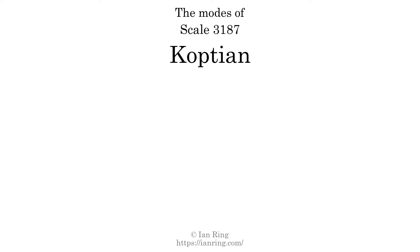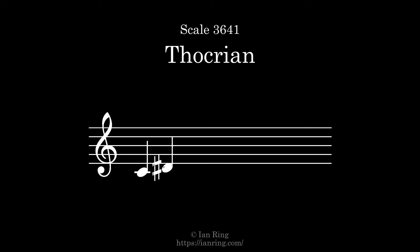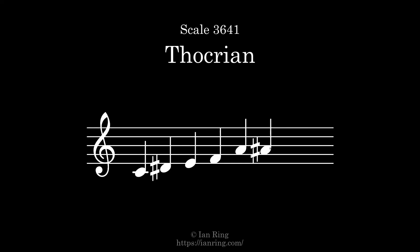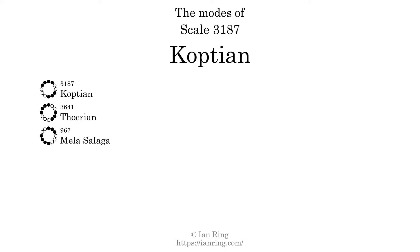This scale has 7 modes. The first mode is itself. The second mode is scale 3641, also known as Thokrian. It sounds like this. The third mode is scale 967, also known as Mela Seliga. It sounds like this.